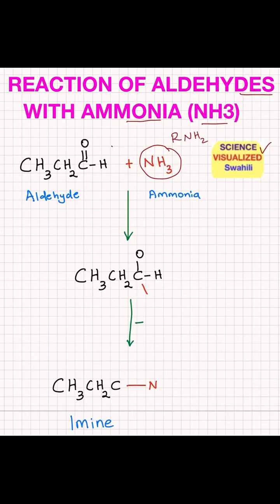And then R-NH2, so like that. The ammonia has a lone pair of electrons, and it will use that to attack the carbonyl.